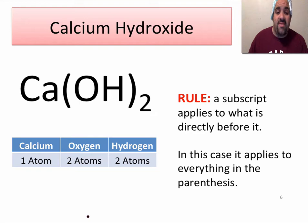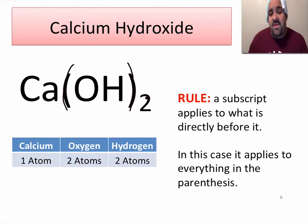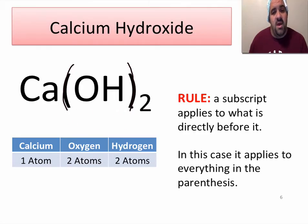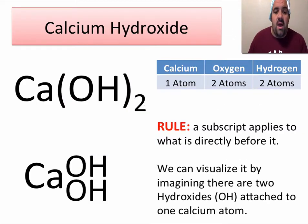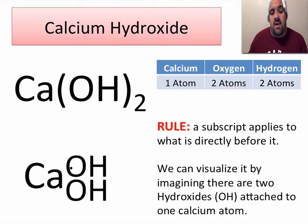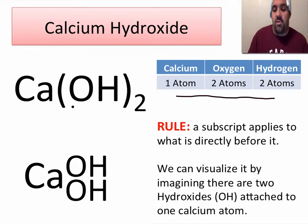In this case, it applies to everything in the parentheses — the parentheses is what is directly before it. So we have calcium hydroxide here, and what this is saying is we have two units of hydroxide. So there are going to be two hydrogen atoms, two oxygen atoms, and only one calcium atom. This two does not apply to the calcium; it only applies to what is directly before it, and that means the entire parentheses. We can visualize this by thinking of there being two hydroxides, so calcium is attached to two hydroxides — two oxygen, two hydrogen, one calcium.